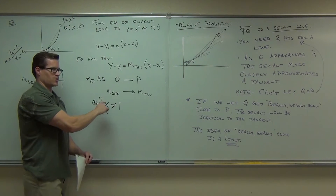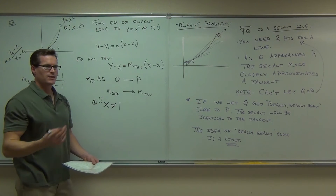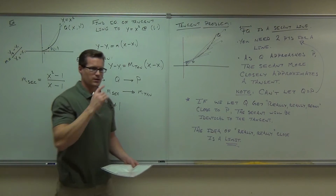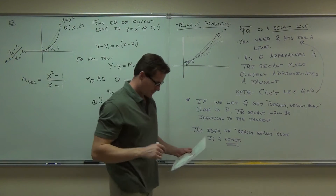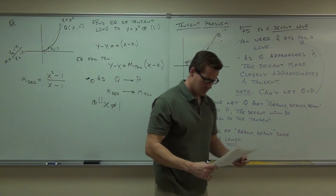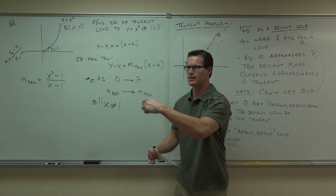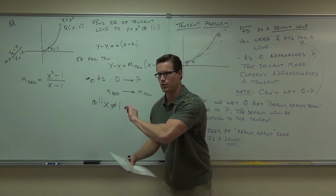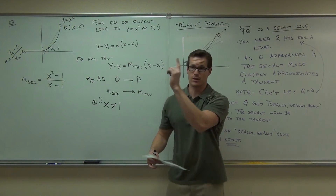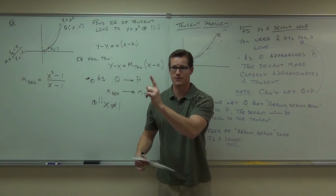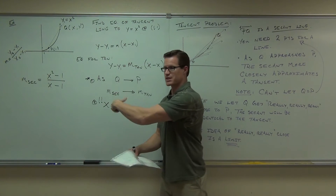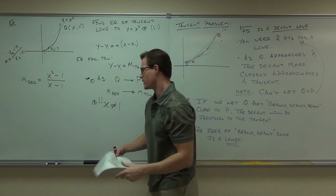That means double important. You can't let x equal 1. This is why we can't let q equal p, because we only have one point. You can't find the slope — it fails. It's undefined at that point.